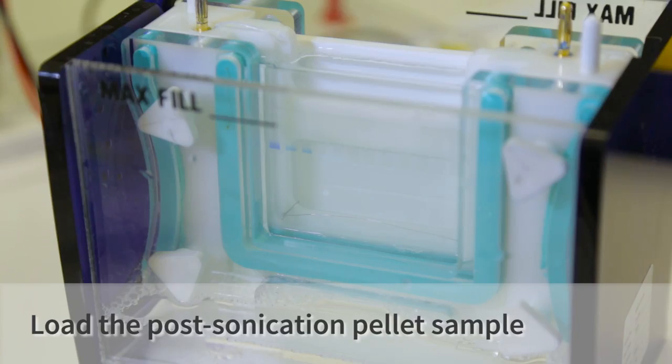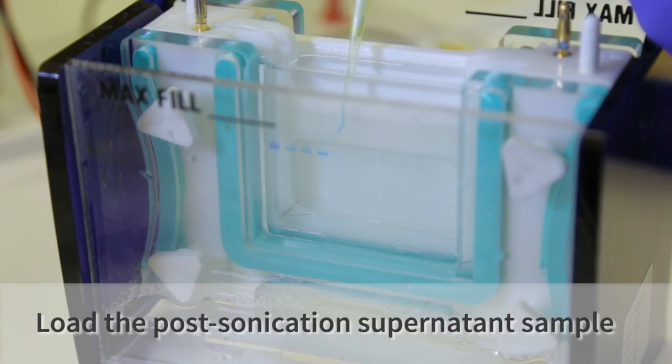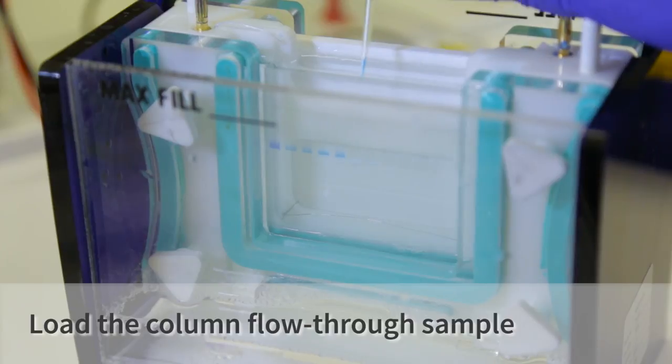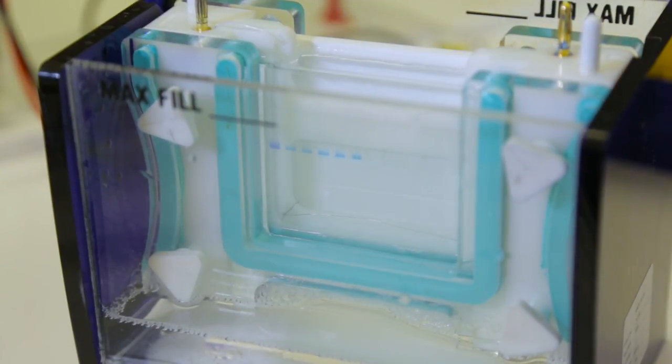The next sample we're going to load is the pellet, so this is the insoluble protein that shouldn't contain our sample hopefully. Now we're going to load the supernatant, so this is the soluble part of the protein fraction. Hopefully our protein is in here. The next sample is the flow-through, so this is any protein that did not bind to our nickel column. This should contain all the proteins the E. coli was expressing because they don't have histag on them and therefore can't bind to the nickel column.